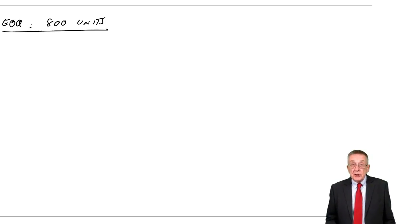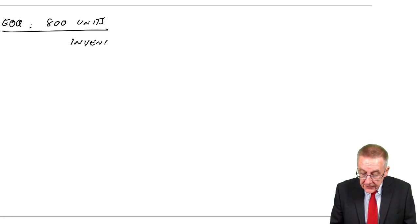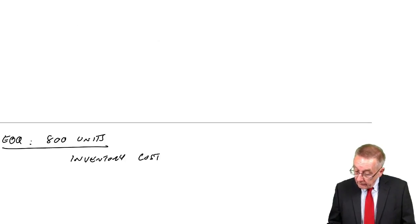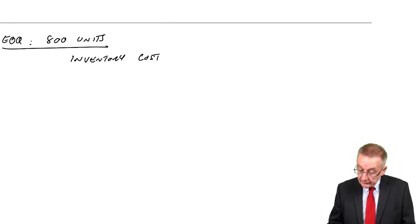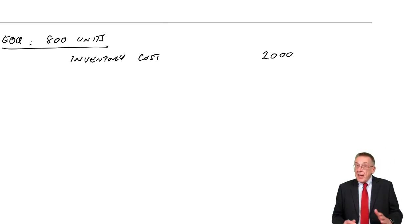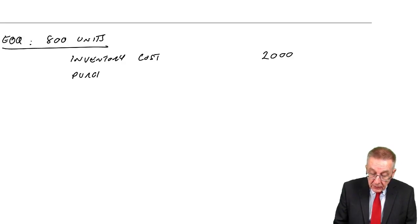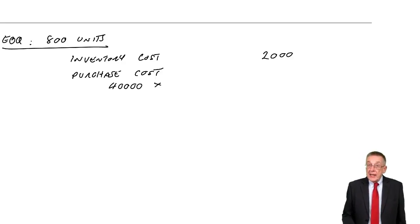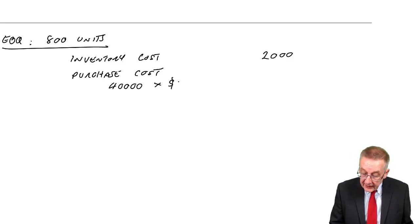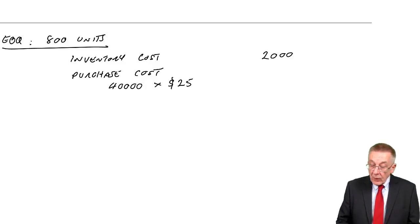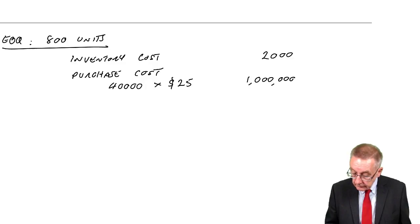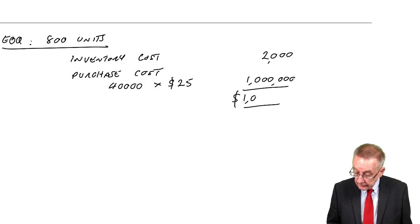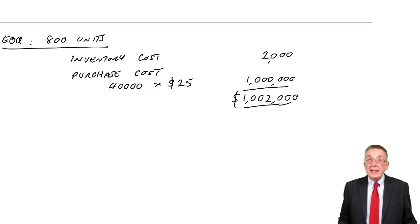And if we order 800 units each time, we already know the inventory costs in total were 2,000. And we know that at any other level, that total will be higher. But we now need to also consider the purchase cost over the year. Remember, we're buying 40,000 units a year. And if we order 800, there's no discount, we'll pay the full $25 a unit, which is 1 million. And so the two together, 1 million and 2,000.